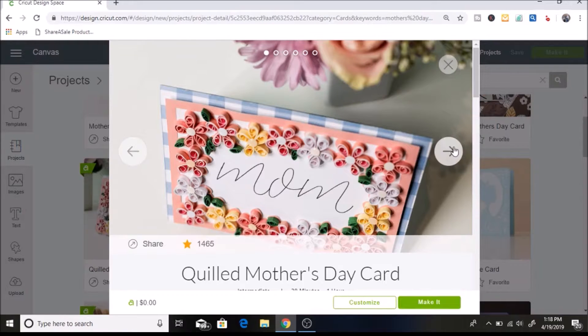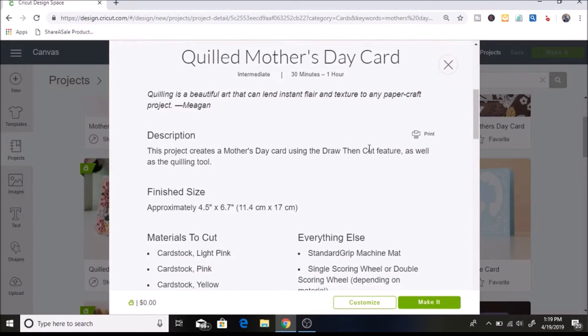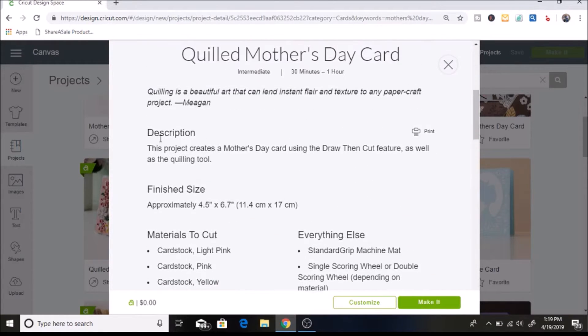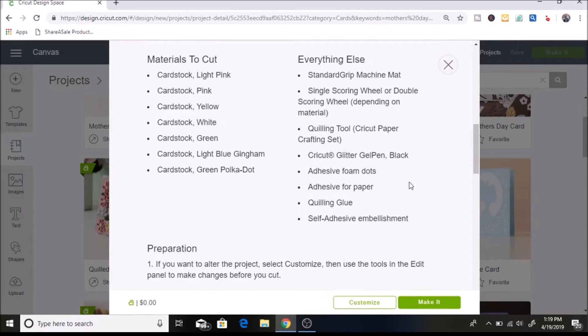So then you can see different views of the card at the top here. And then when you scroll down, you can see that there's a description. It's a draw and cut feature. And it'll show the different materials that you need to cut it out with and it'll show all of the tools that you need.